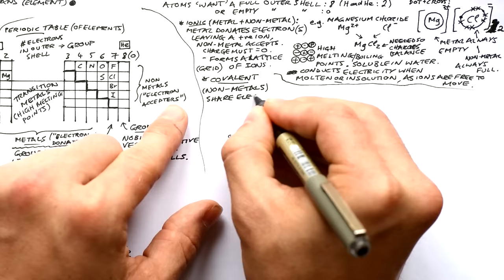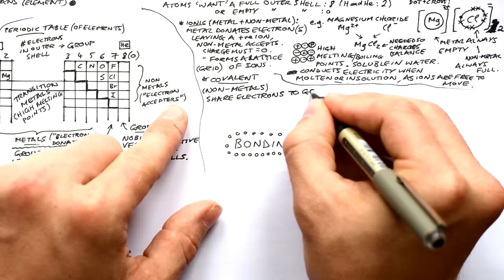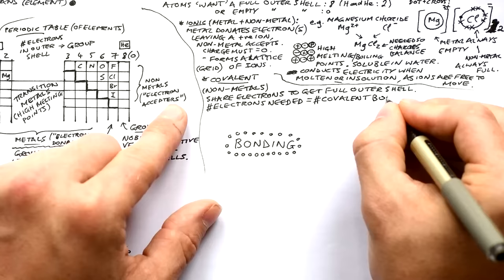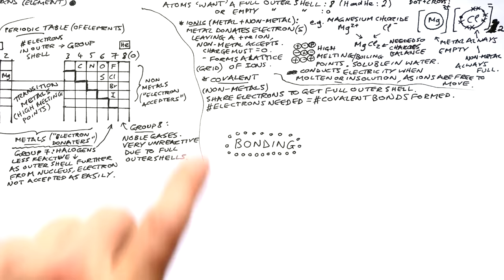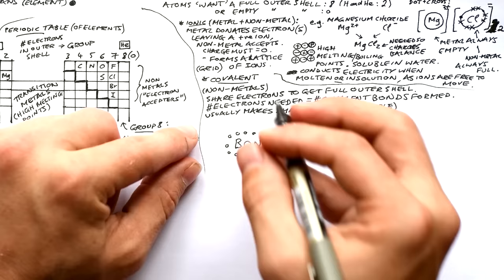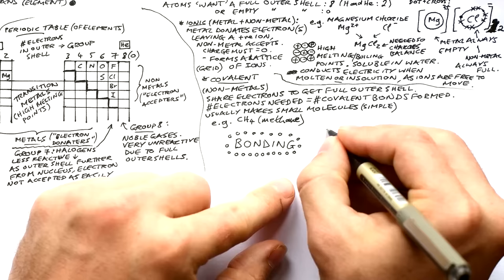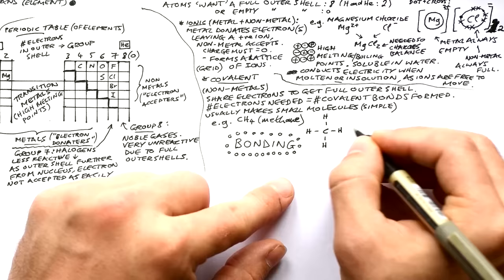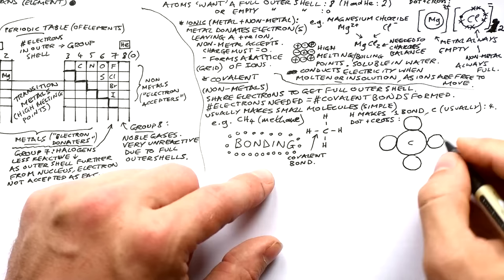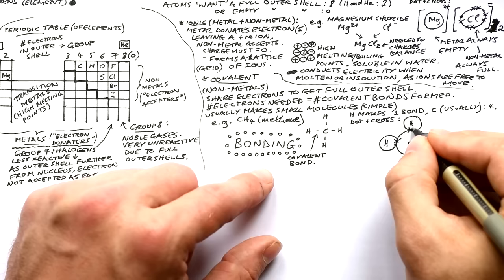Covalent bonding is when non-metals bond to other non-metals — they share electrons rather than donate them. The number of electrons a non-metal needs to complete its outer shell equals the number of covalent bonds it forms. Hydrogen needs one so it makes one bond; carbon is in group 4 so it needs four more electrons and makes four bonds. These usually form small molecules — simple covalent bonding. Take methane (CH₄): in the structural formula, lines represent bonds, and the dot-and-cross diagram shows shared electron pairs.